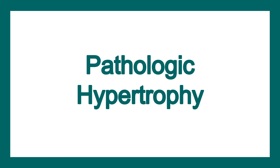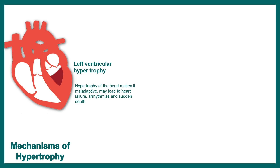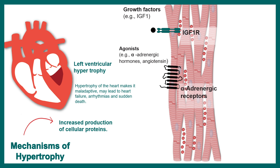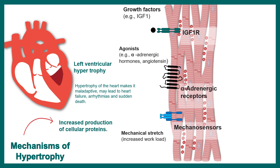Now let's talk about pathological hypertrophy. One of the best examples is left ventricular hypertrophy, where the heart becomes maladaptive, arrhythmic, and can lead to heart failure and death. This occurs due to increased production of cellular protein triggered by excessive hemodynamic load, mediated through IGF-1/IGFR signaling, adrenergic receptors, and mechanosensors in the heart muscle.